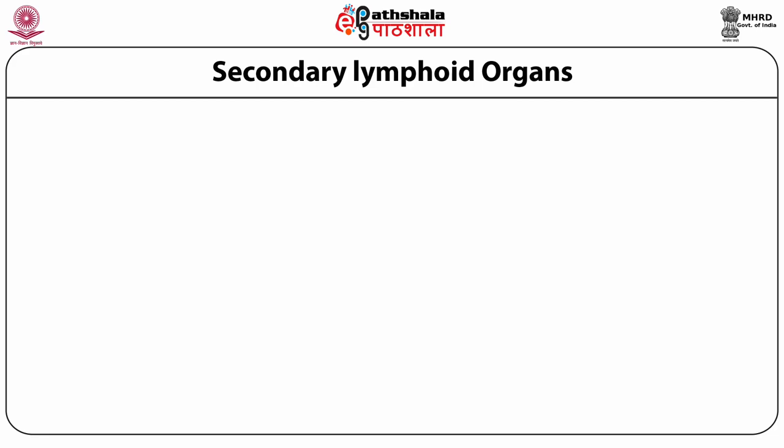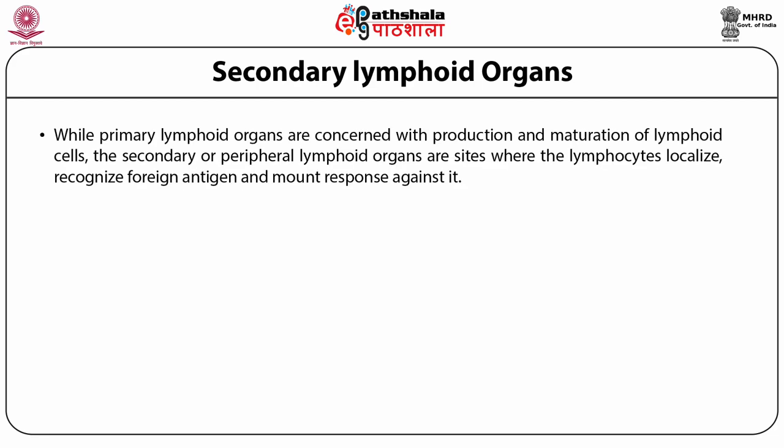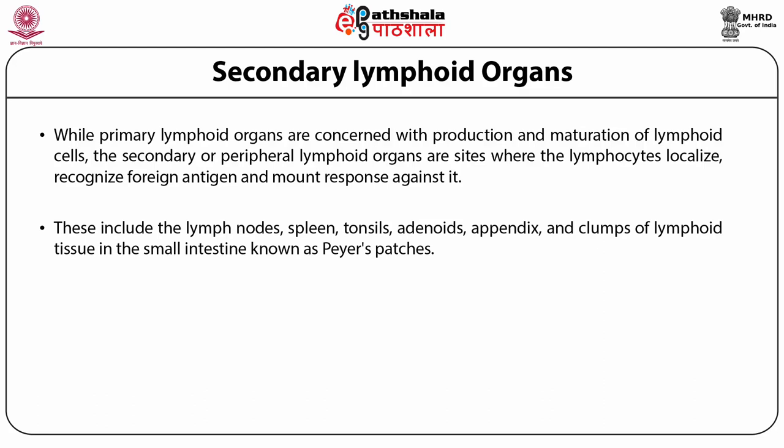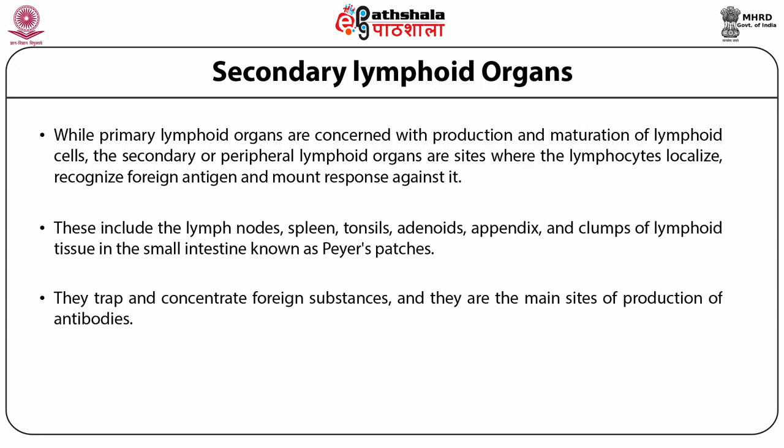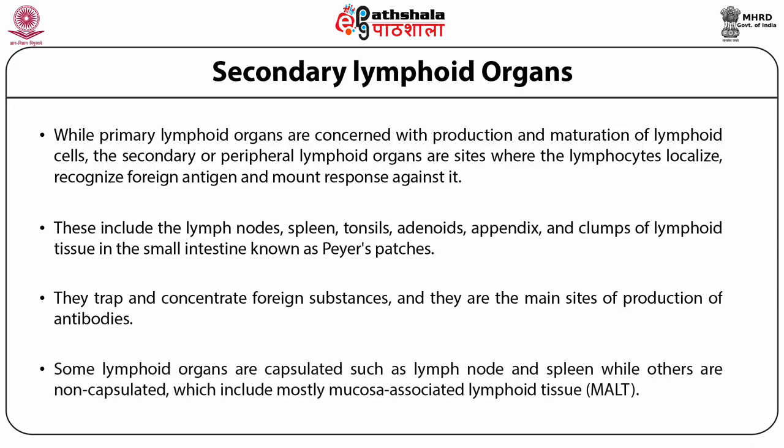Secondary lymphoid organs: while primary lymphoid organs are concerned with production and maturation of lymphoid cells, the secondary or peripheral lymphoid organs are sites where lymphocytes localize, recognize foreign antigen, and mount a response against it. These include lymph nodes, spleen, tonsils, adenoids, appendix, and clumps of lymphoid tissue in the small intestine known as Peyer's patches. They trap and concentrate foreign substances and are the main sites of antibody production. Some lymphoid organs are encapsulated, such as lymph nodes and spleen, while others are non-capsulated, which include mostly MALT.